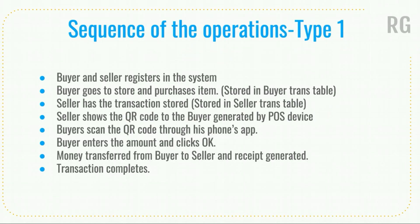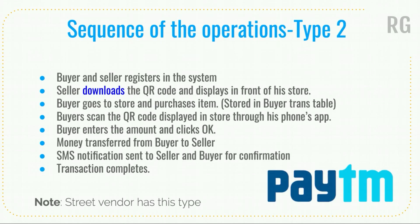Before going into the system design, let's understand the sequence of operations. In Type 1: buyer and seller register in the system; buyer goes to the store and purchases an item; that information is stored in the buyer transaction table; seller shows a QR code generated by the POS device; buyer scans the QR code through his phone app; buyer enters the amount and clicks OK; money gets transferred from buyer to seller; receipt is generated and transaction completes.